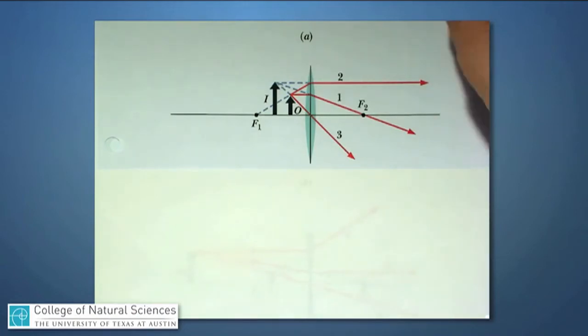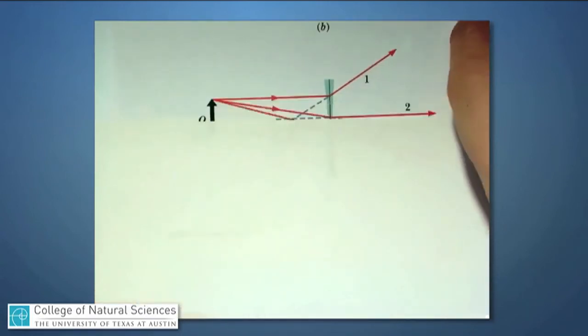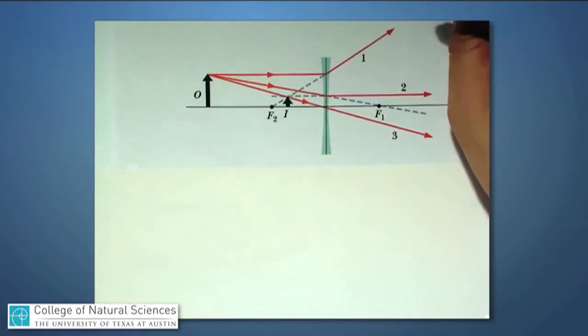The last example I'd like to do is one with a concave lens, and I'll look at it right here. It turns out it doesn't really matter where I put the object, I'll place it right there. It won't change the conclusions dramatically.